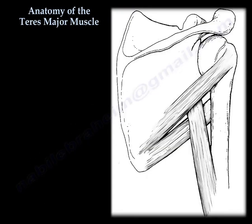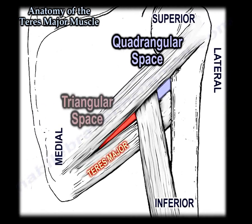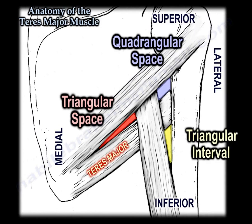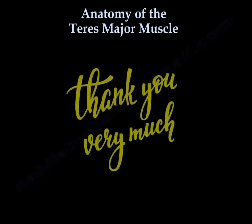In this diagram, the quadrangular space is laterally positioned, the triangular space is medially positioned, and inferiorly is the triangular interval. The teres major is involved in all three of them. Practice identifying the boundaries and contents of each space. Thank you very much, I hope that was helpful.